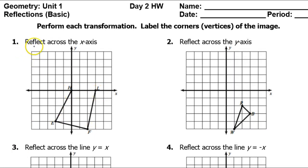In problem number one we are supposed to take this pre-image and reflect it across the x-axis, meaning we are going to use the x-axis as the mirror line. If you have a point that is on the reflection line, it's not going to move anywhere, so those two points stay exactly where they are. Now take point E — if I reflect it over the x-axis it's going to be equally distant on the opposite side.